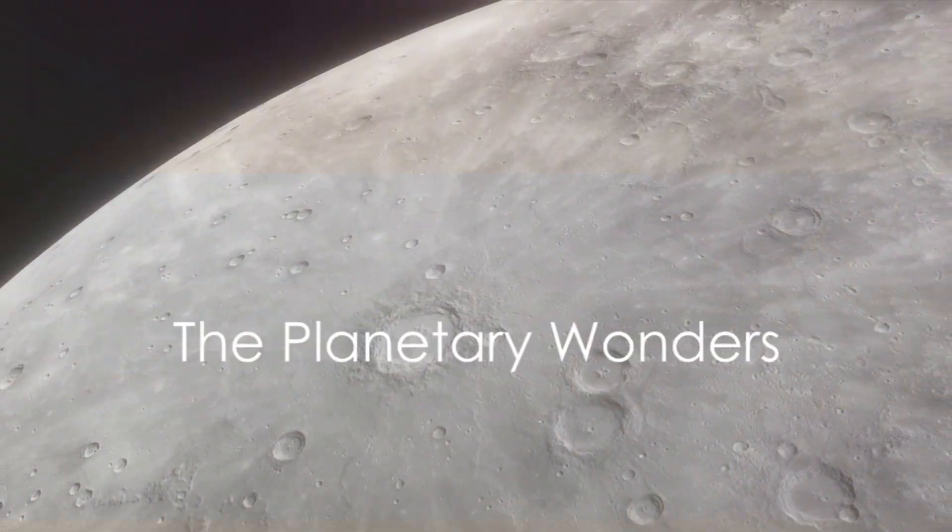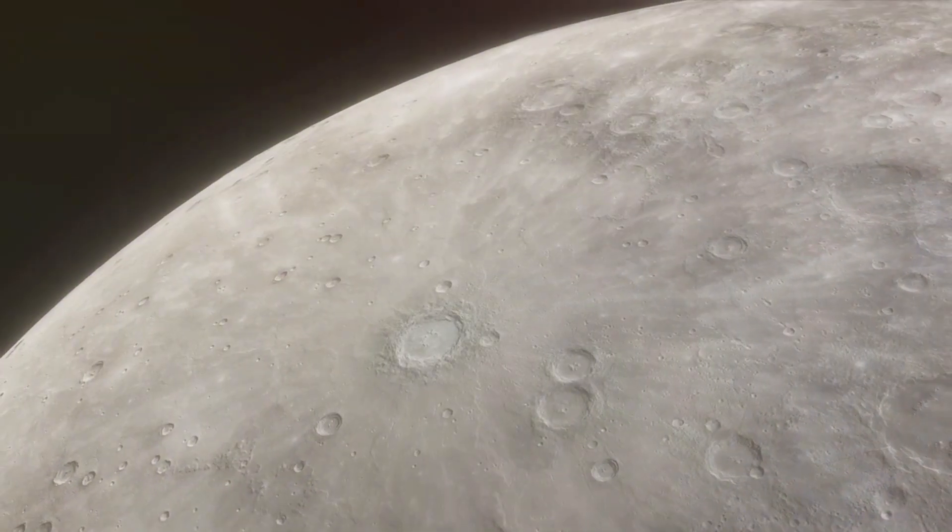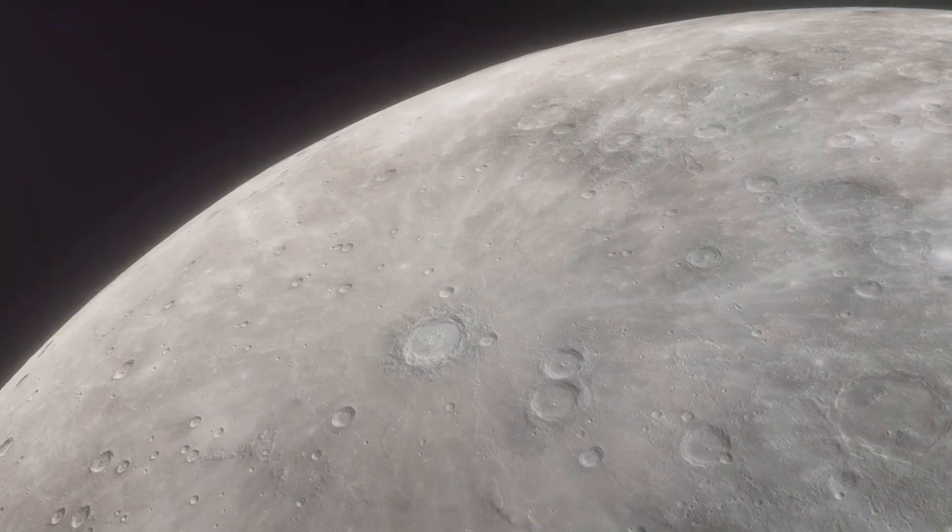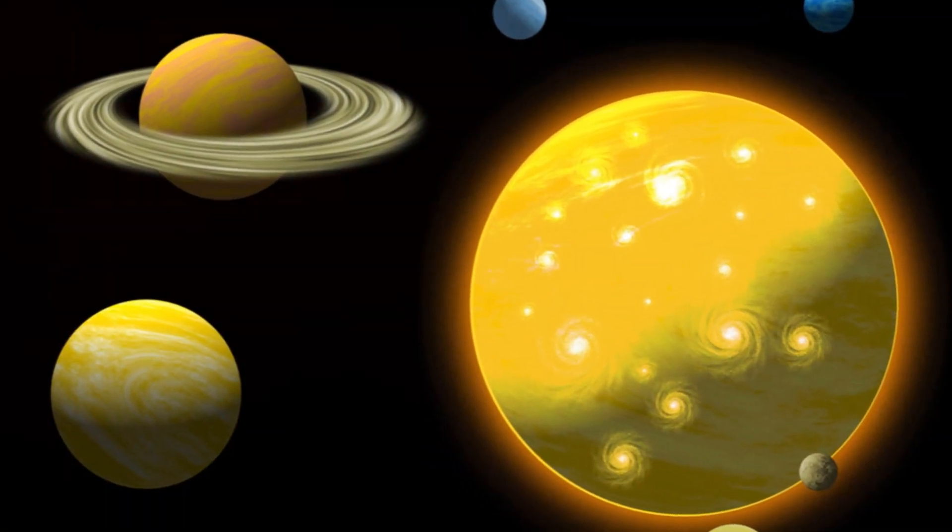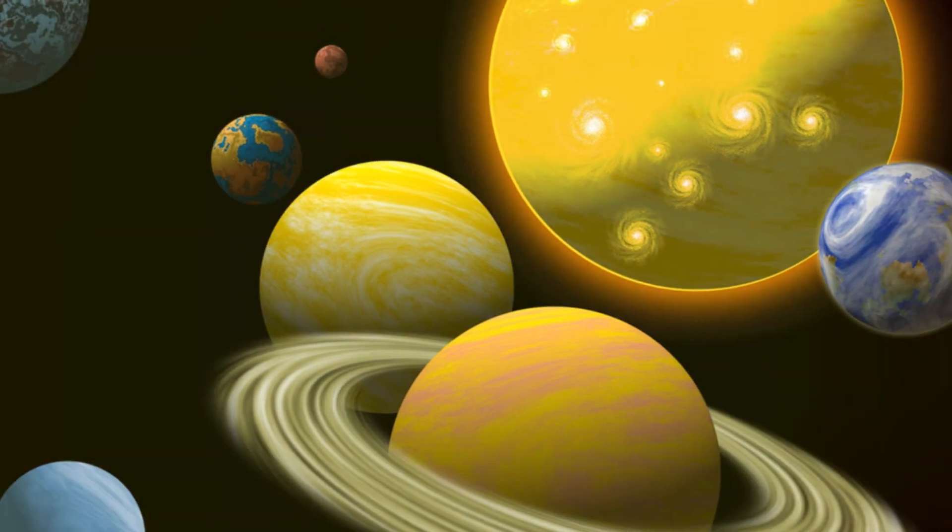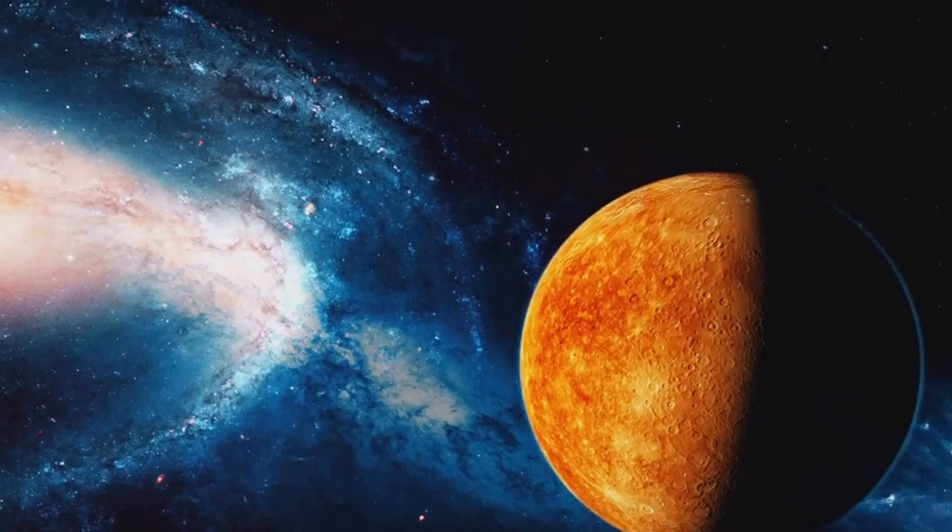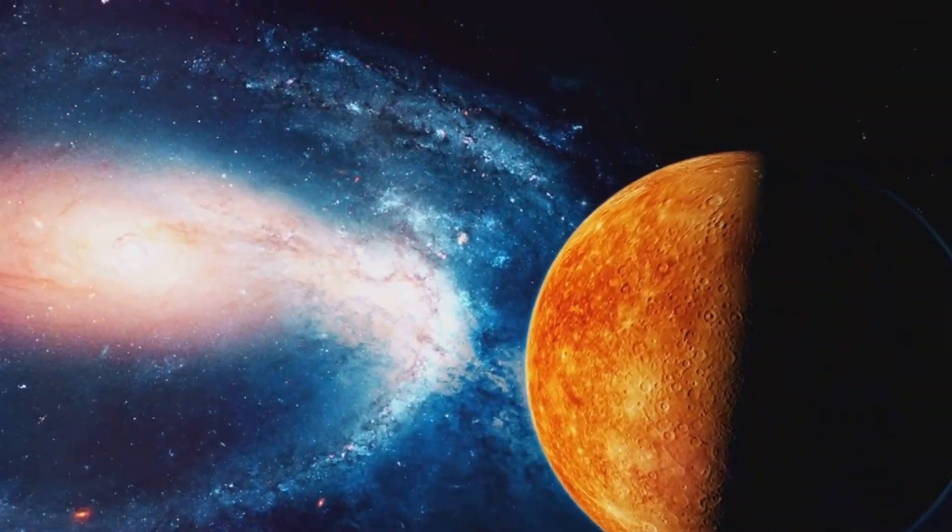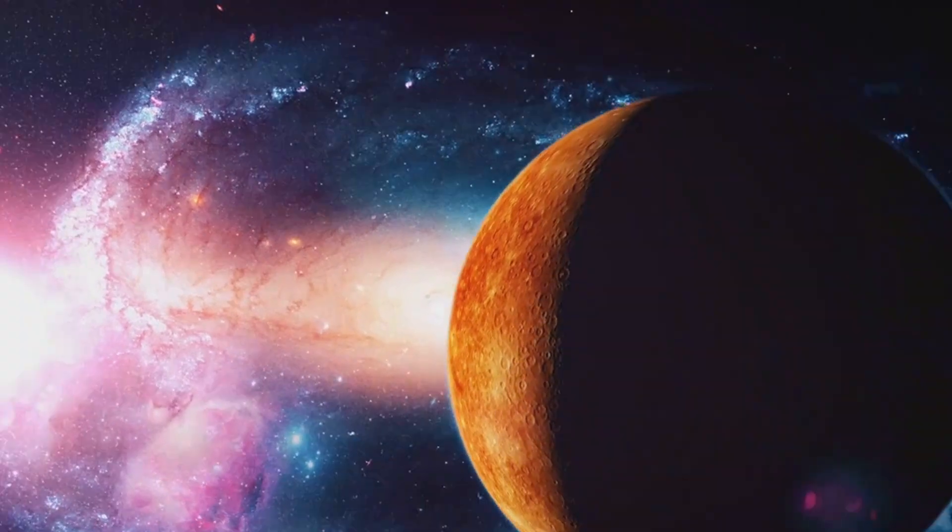Imagine standing on a planet where a year lasts just 88 Earth days. Welcome to Mercury, the smallest planet in our solar system. Mercury, the closest planet to the Sun, is a tiny world of extremes. Its days are scorching hot, while its nights are bitterly cold. Despite its size, Mercury is a planet of wonders, with a giant iron core and a thin exosphere that's constantly replenished by the solar wind.